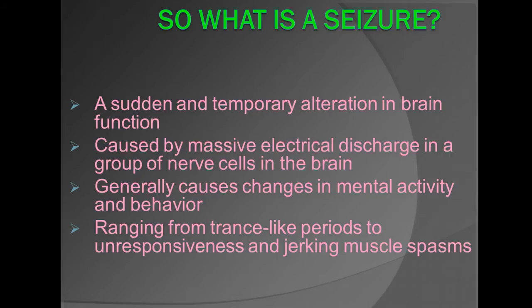What is a seizure? A seizure is a sudden and temporary alteration in brain function, caused by massive electrical discharge in a group of nerve cells in the brain. It generally causes change in mental status, activity, and behavior. Seizures range from trance-like periods to unresponsive and jerking muscle spasms.